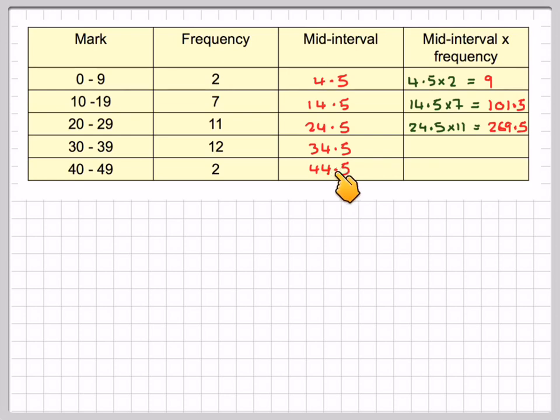Then 34.5 times 12, which gives 414. And finally, 44.5 times 2, which gives 89.